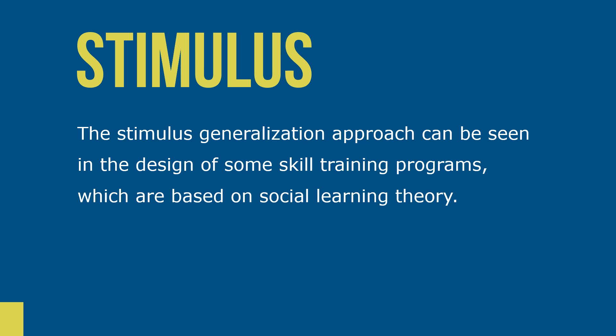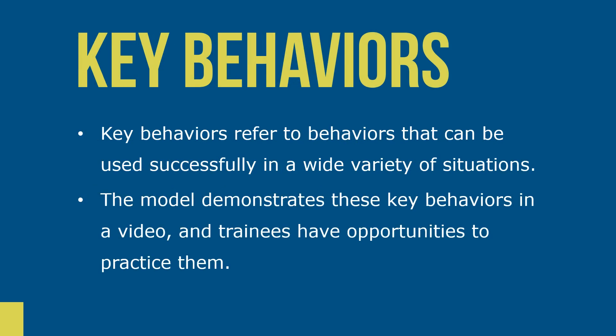The stimulus generalization approach can be seen in the design of some skill training programs based on social learning theory. Recall that modeling, practice, feedback, and reinforcement play key roles in learning. One step in developing effective interpersonal skills training programs is to identify key behaviors needed to be successful in a situation. Key behaviors refer to behaviors that can be used successfully in a wide variety of situations. The model demonstrates these key behaviors in a video, and trainees have opportunities to practice them in a variety of situations that are not identical.